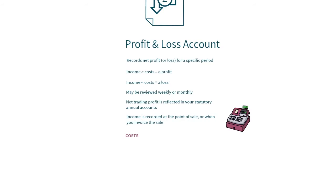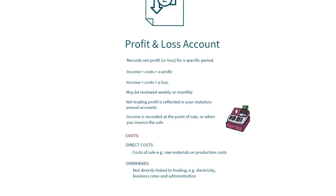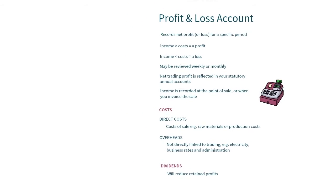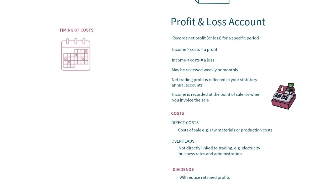Some of the costs incurred in that period will be directly associated with the sales activity, for example raw materials purchased and used, or production line wage costs. Other cost elements will be overheads incurred irrespective of the level of trading activity, for example costs like electricity, business rates, administration staff costs, etc. Also, any dividends you take out of the business will impact on the retained profit left in the business. Your accounting system or accountant will manage when costs incurred are recognised in your profit and loss account, aiming to match income and associated costs in the same period, by adjusting costs using accounting methods such as accruals and prepayments.